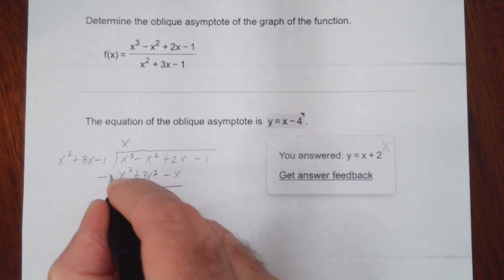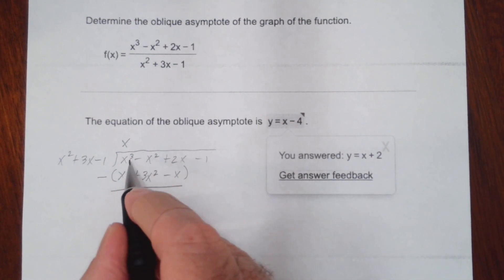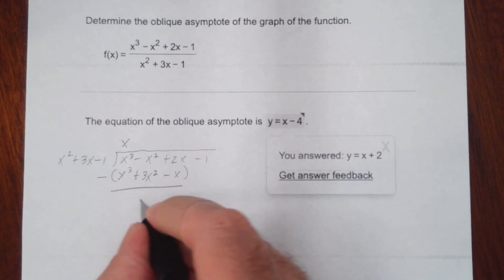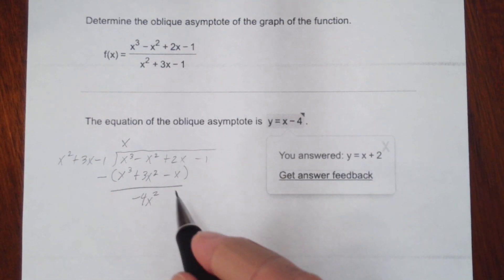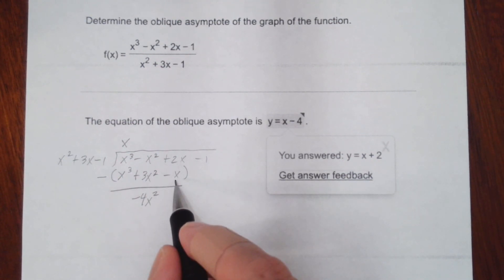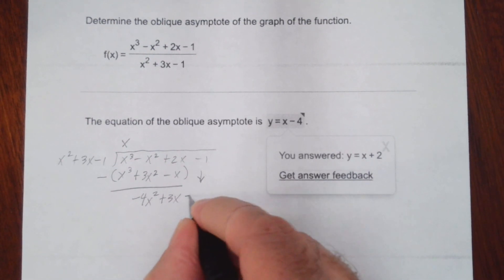And we're going to subtract this from what's above. So we'll have x cubed minus x cubed, that's zero. And negative 1x squared minus 3x squared, negative 1 and negative 3, that'll be negative 4x squared. And we have 2x minus negative 1x, that'll become plus 1x, and that's 3x. And we'll drop the minus 1.